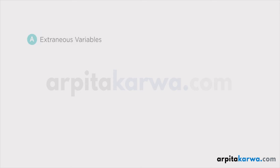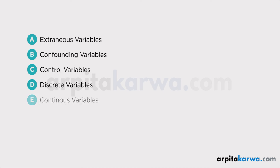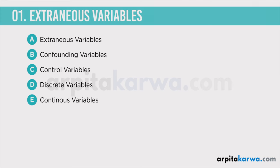In this particular lecture, I'm going to talk about five important types of variables, namely extraneous variables, confounding variables, control variables, discrete variables, and continuous variables. Let's begin by looking at extraneous variables.